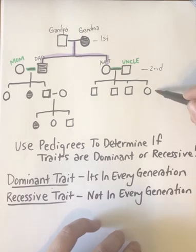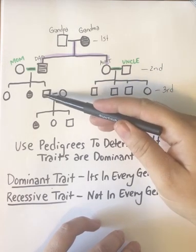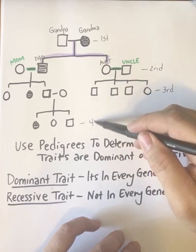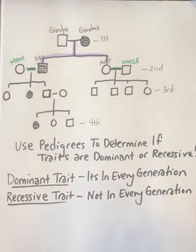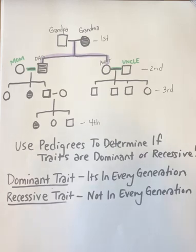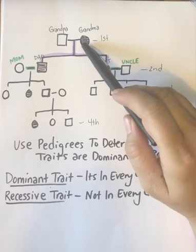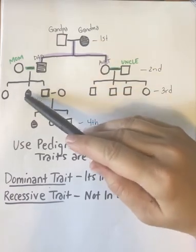My generation would be the third generation, and then my brother's kids would represent the fourth generation. Now if we're looking at pedigrees to determine if traits are dominant or recessive, there are a couple things to remember. Genetic traits and conditions like cystic fibrosis or achondroplasia can be dominant or recessive.